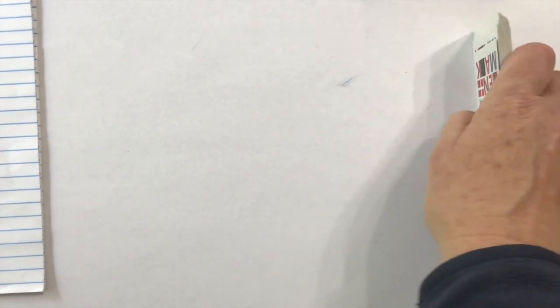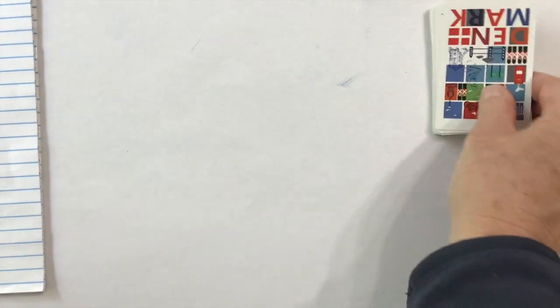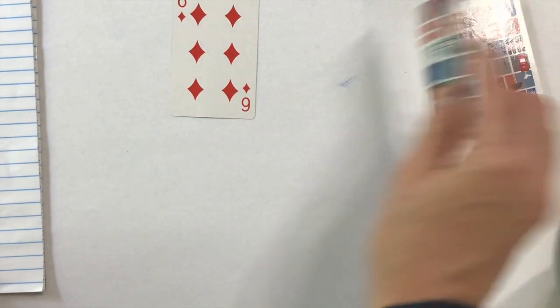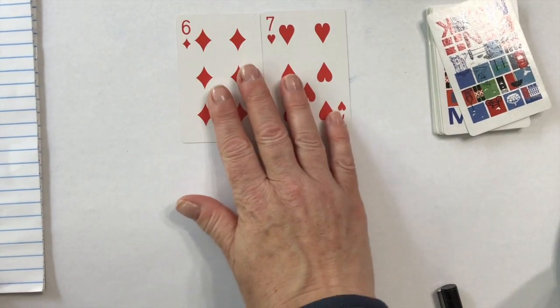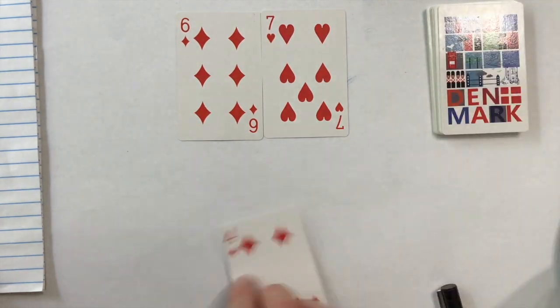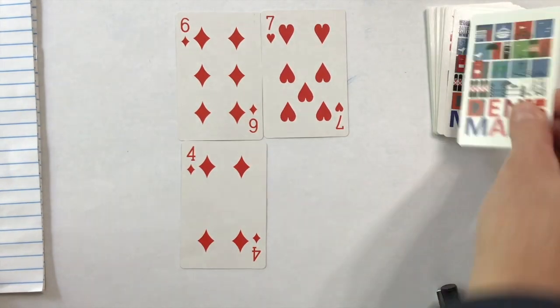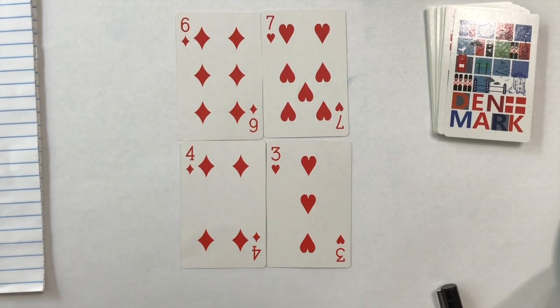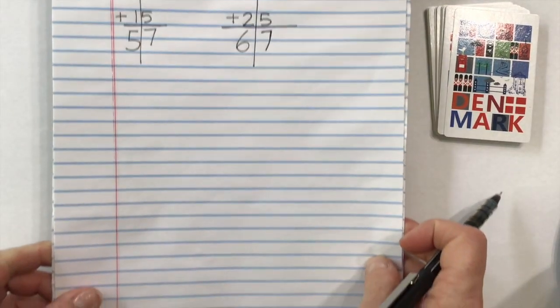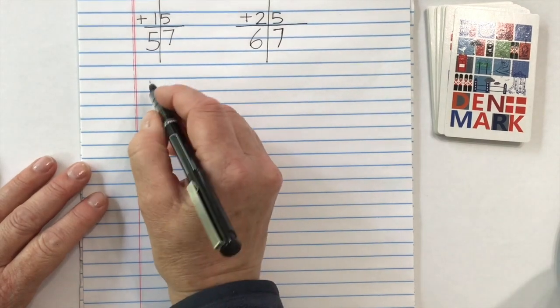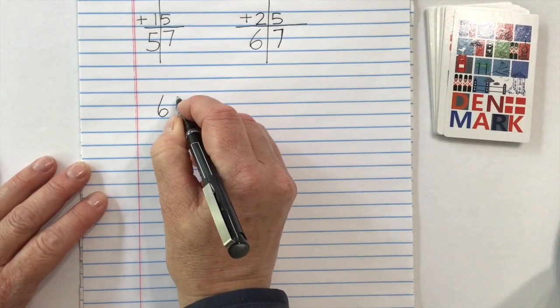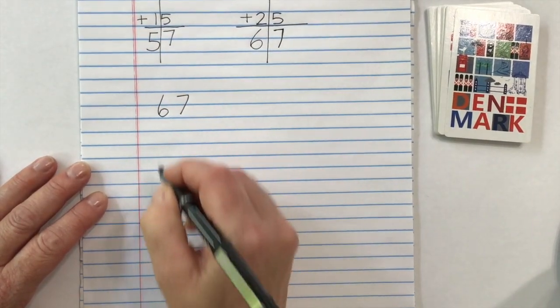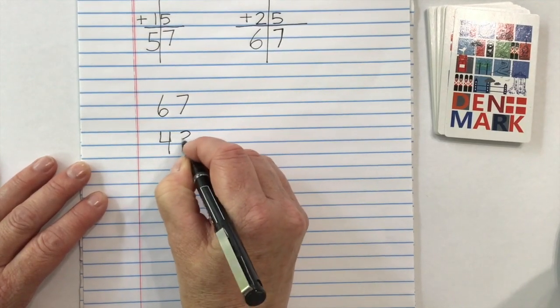Let's do this one more time together with our deck of cards. Get ready to write down these numbers. 67 plus 43. Let's write our numbers down. 67 plus 43.